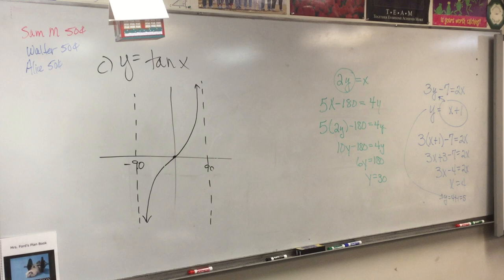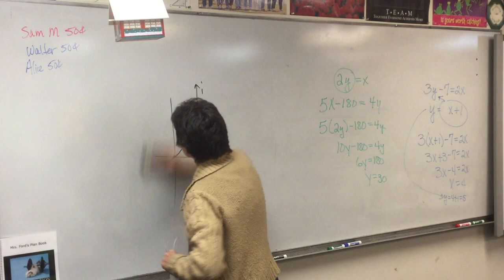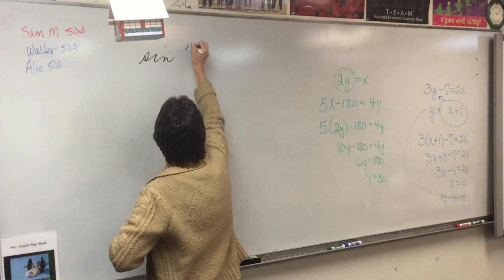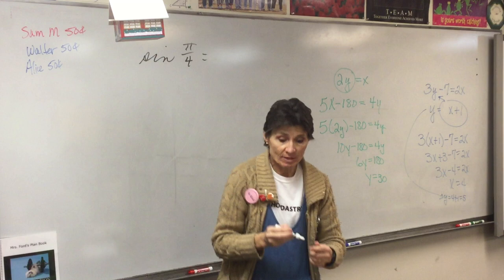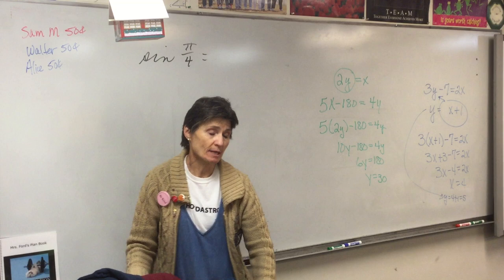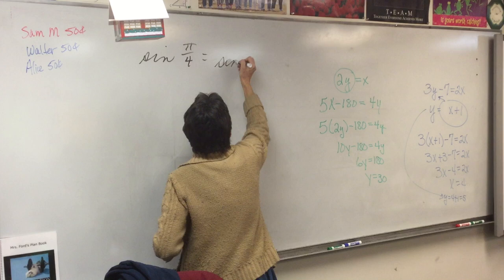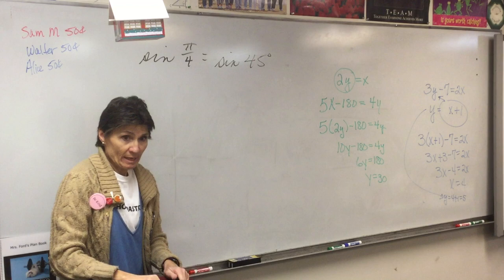Number two on quiz one: find the exact value of the sine of pi over four. So sine of pi over four — that question is like the little quiz we took. What do we do first? 180 divided by four, so this is the sine of 45 degrees.